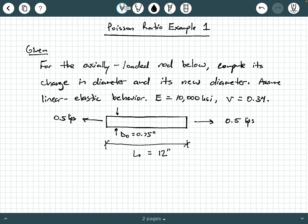If you take a look at our given information, we have an axially loaded rod and we are being asked to compute the change in its diameter and its new diameter. We are being told to assume linear elastic behavior, we are given a modulus of elasticity of 10,000 ksi, and we are given a Poisson ratio of 0.34. Here is our rod.